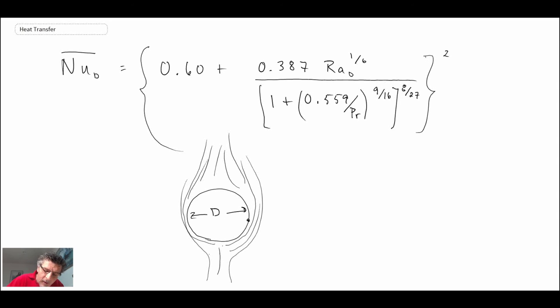And then T-wall would be T-wall, or sometimes T-S. Those are the same. And then out here we have T-infinity, the free stream temperature. So that is the case of the cylinder. Now let's take a look at a sphere.